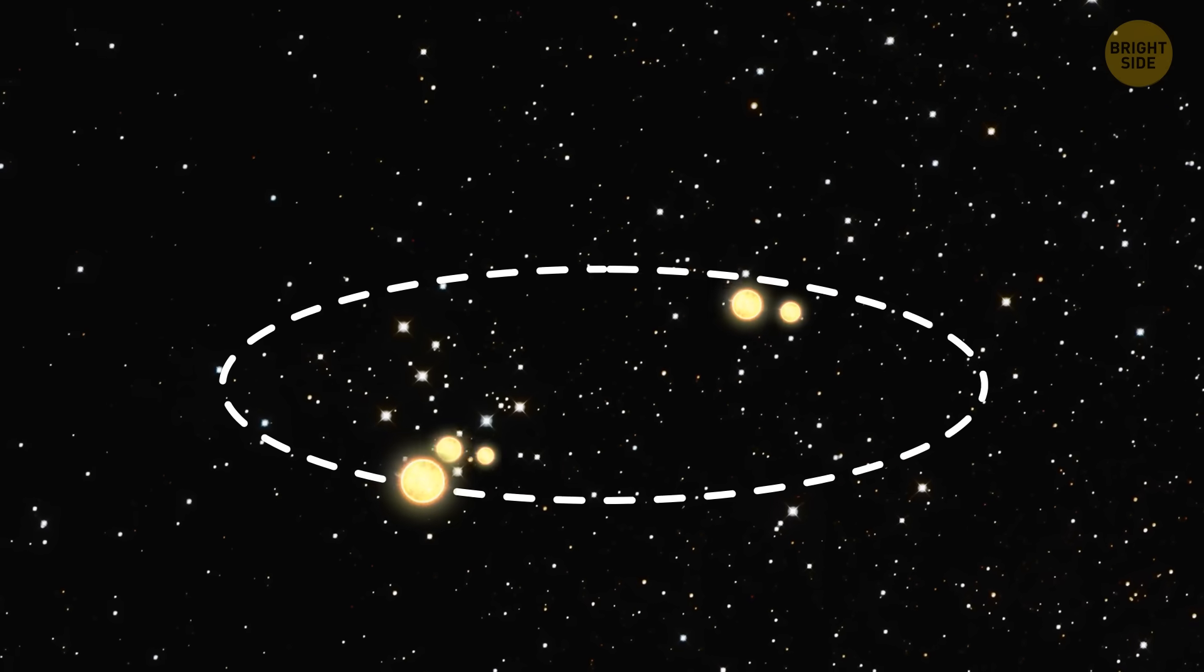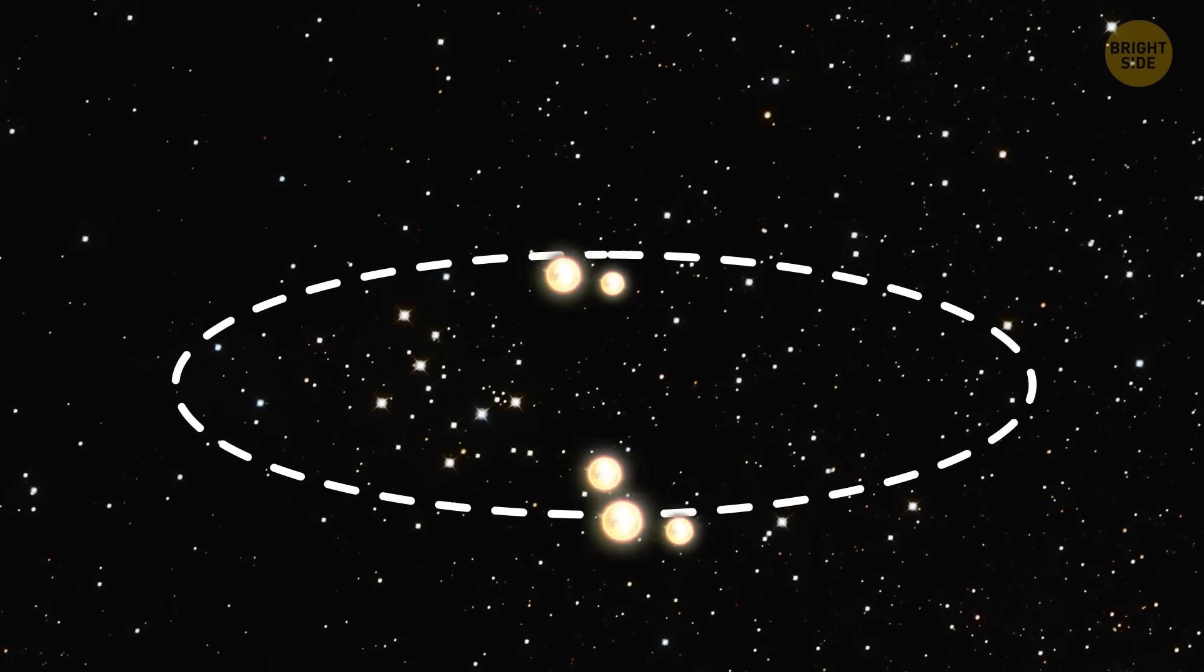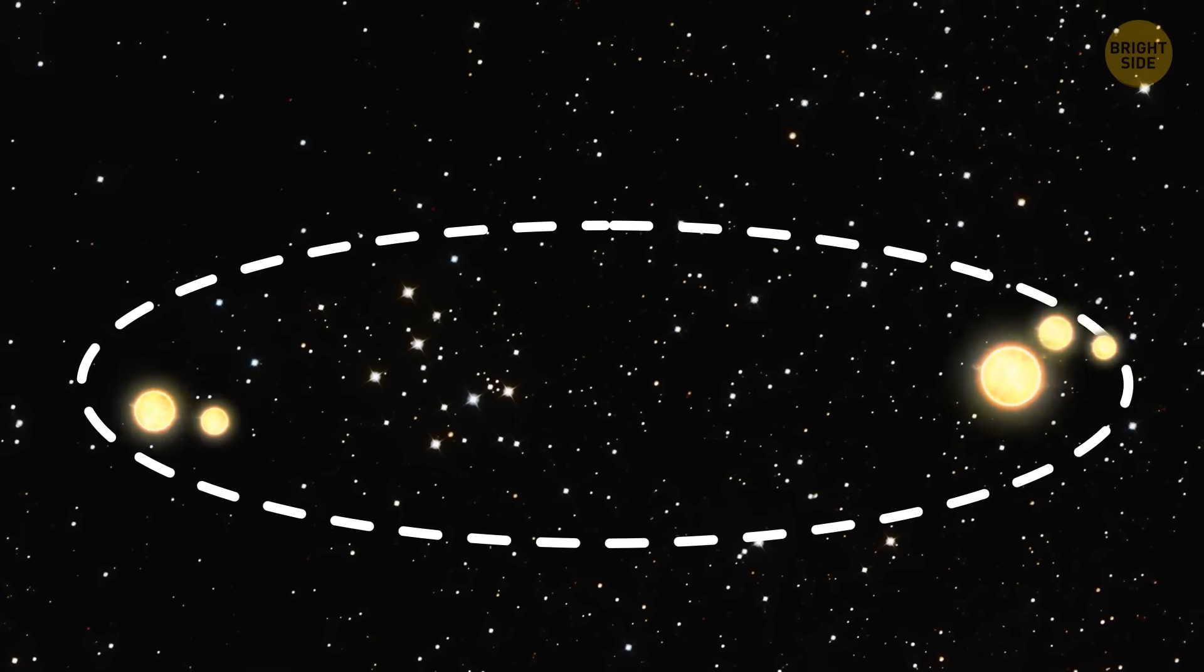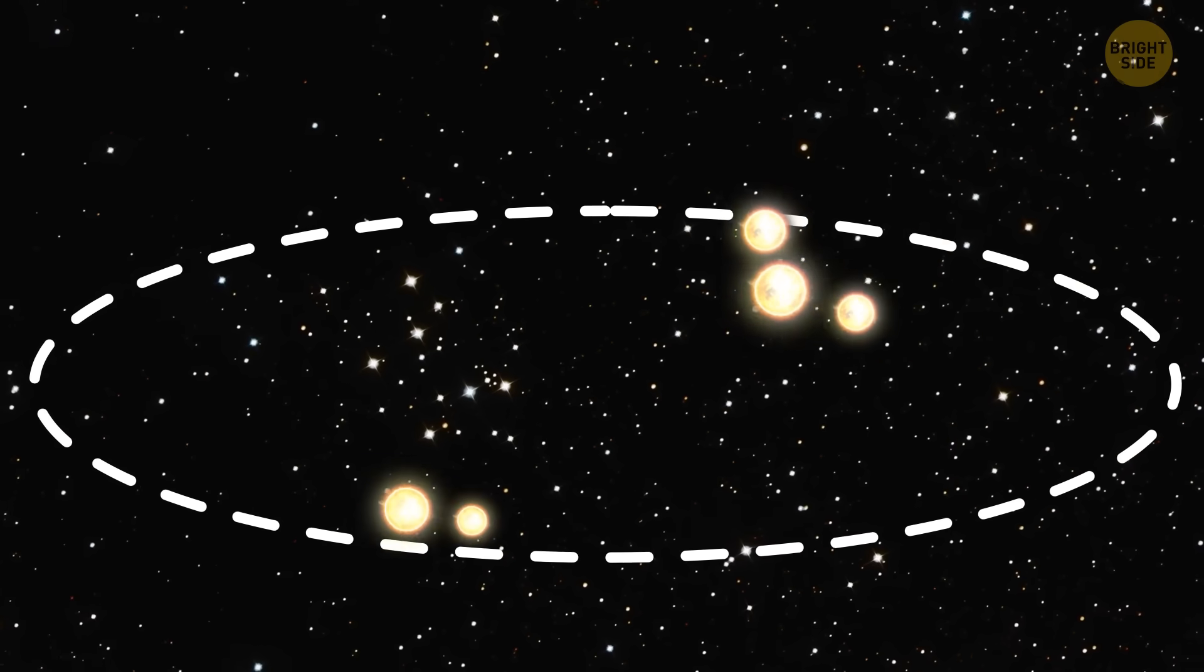Now, this doesn't mean they're all incredibly close to each other. They don't do some kind of a square dance. In fact, they're separated by more than the distance of Pluto's orbit around the Sun.